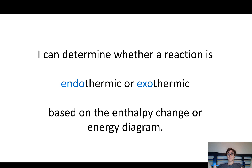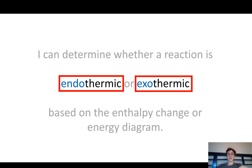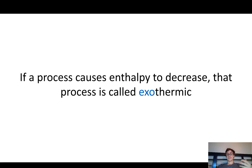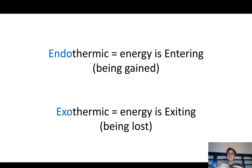So, hopefully you now know what enthalpy is. If a process causes enthalpy to increase, the process is called endothermic. And if a process causes enthalpy to decrease, it's called exothermic. Endothermic means that energy is entering or being gained — the energy is going into your chemicals. And exothermic means that energy is exiting the chemicals, leaving and going into something else, like turning into heat.